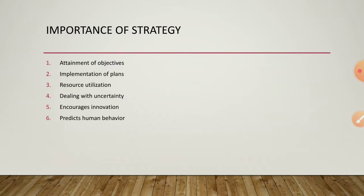The sixth importance is that strategy predicts human behavior. Strategy is created to take into account the probable behavior of customers, competitors, and employees. It helps to predict human behavior, which is very useful for success. In the case of customers, strategy can predict what kind of products they require and what their expectations are, so we can produce accordingly.